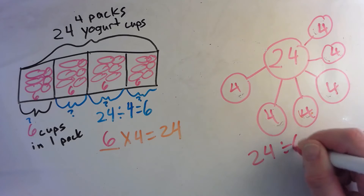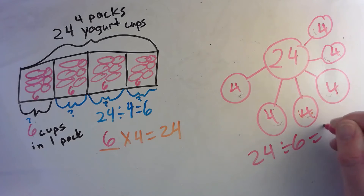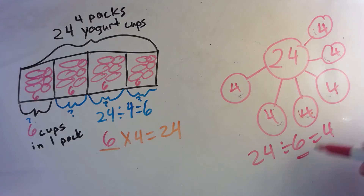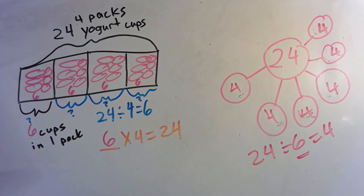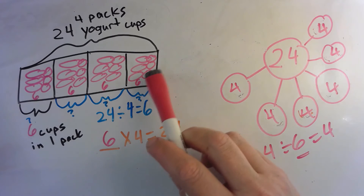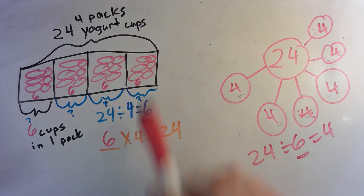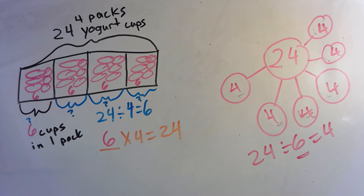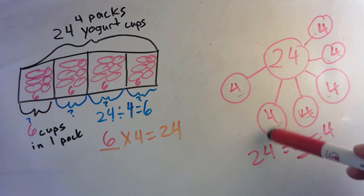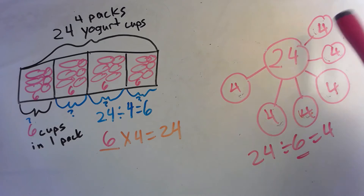How does the quotient in the two number bonds represent different things? The six in the first number bond represents the size of the groups — that's 24 divided by 6 equals 4. The six in the second number bond represents the number of groups — how many groups there are.